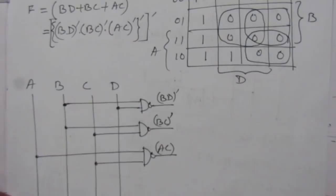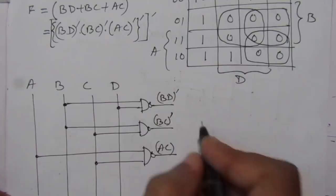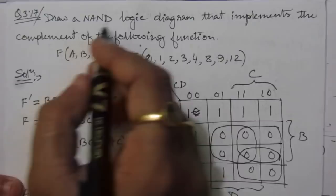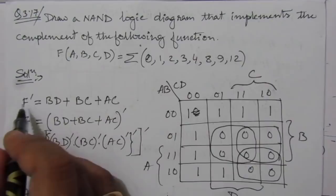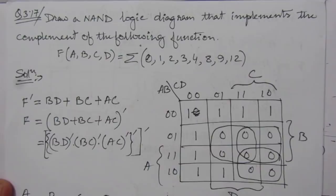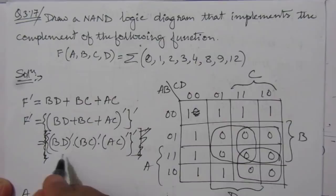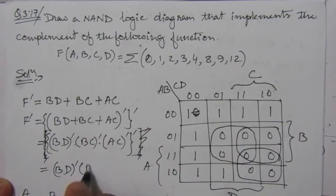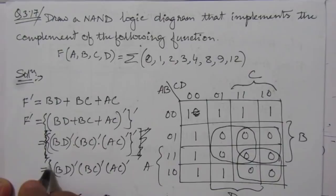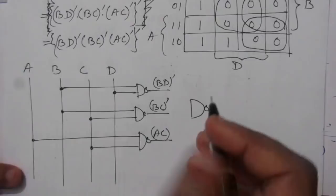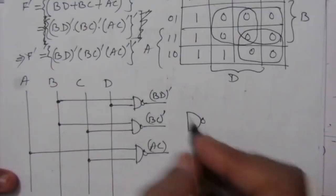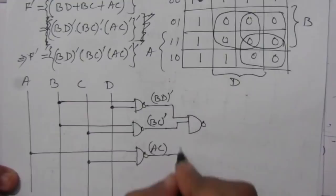Now we need to combine these terms. Since the question asks us to draw the logic diagram for F complement itself, we do not need to perform another complement. F complement is BD̄ · BC̄ · AC̄ — taking the three NAND gate outputs as inputs to another NAND gate gives us F complement directly at the output.